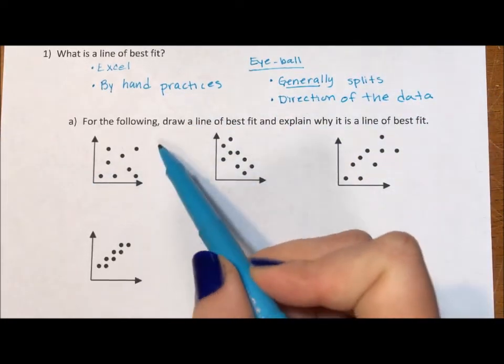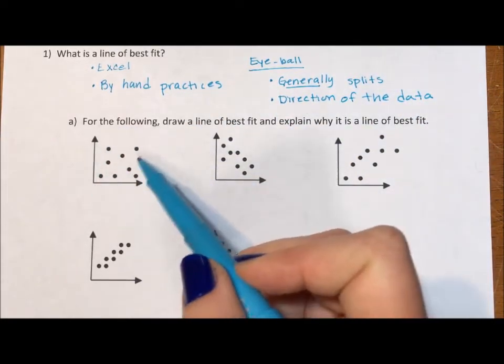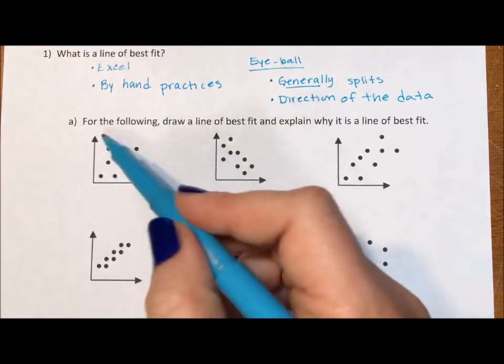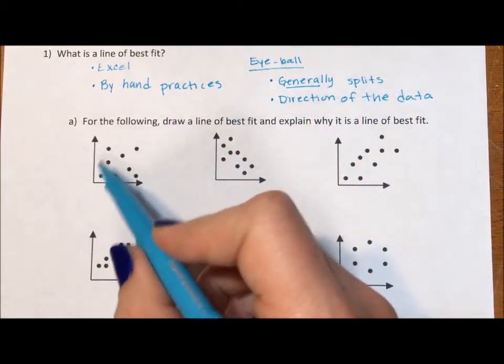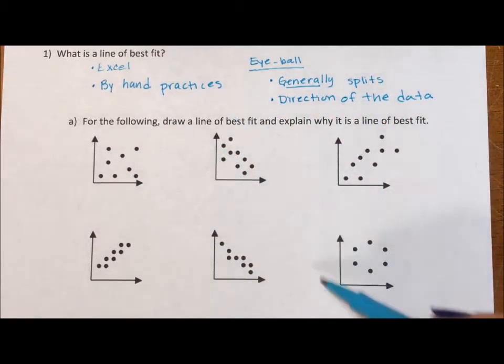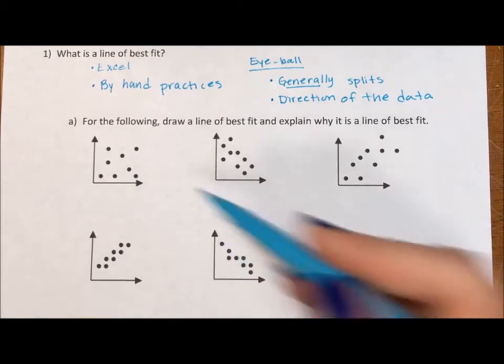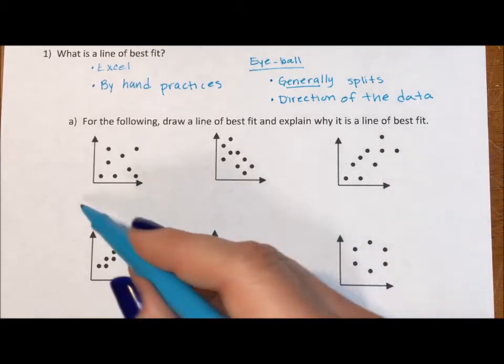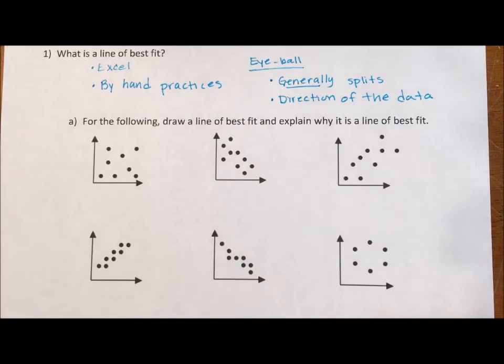If we look at this first plot, there's really no correlation. This is really a scatter, as is this last one. These two you could come up with a line of best fit, but it would be really rough. So I added those just to kind of discuss the idea that not everything has a line of best fit.